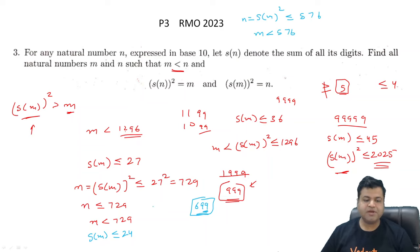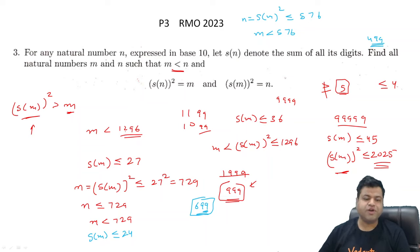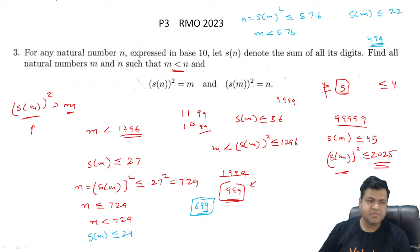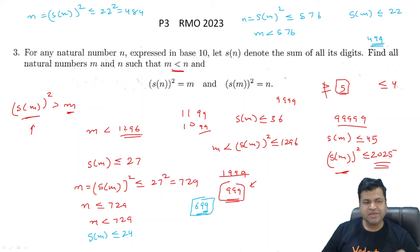Applying the same process again: among numbers less than 576, the maximum digit sum corresponds to 499 — giving digit sum 22. So S(M) ≤ 22, meaning M = S(M²) ≤ 22² = 484. We continue tightening the bound.